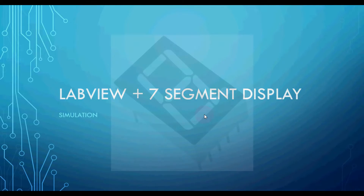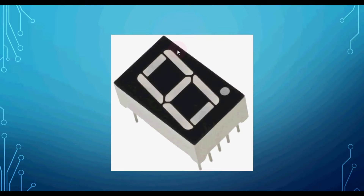Let's get started. A 7-segment LED display looks like this. It is a digit display unit that consists of eight LEDs — seven for the digit and one for the decimal point. They are available in various shapes, sizes, and colors. These are the seven LEDs for digit display purpose, and this one is for decimal point display.